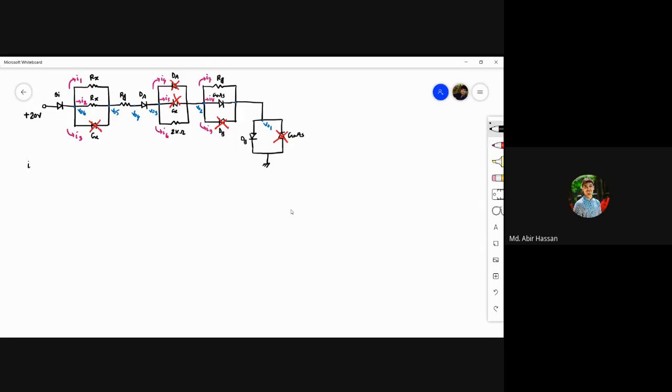Now, i3 equal to zero, i4 equal to zero, i5 equal to zero, i9 equal to zero. These currents are zero because of the circuit characteristics.